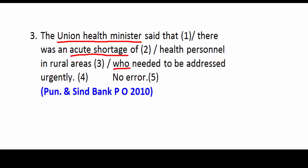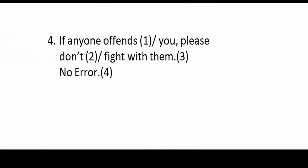Clearly you will understand that the problem is not the minister — the problem is the shortage of health personnel. Therefore, the antecedent of the pronoun is 'acute shortage.' Since 'acute shortage' is the antecedent, the pronoun 'who' is not correct, because 'who' refers to human beings. The correct answer is 'which' — 'which needed to be addressed urgently.' Therefore the correct answer is option 4. These banking questions are related to SSC questions of a similar topic.